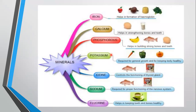Minerals are substances found in soil and water. These minerals are taken up by plants, which in turn are eaten by animals. Each mineral has a specific function to perform in the body. For example, iron helps in the formation of hemoglobin, and calcium helps in strengthening of bones and teeth.